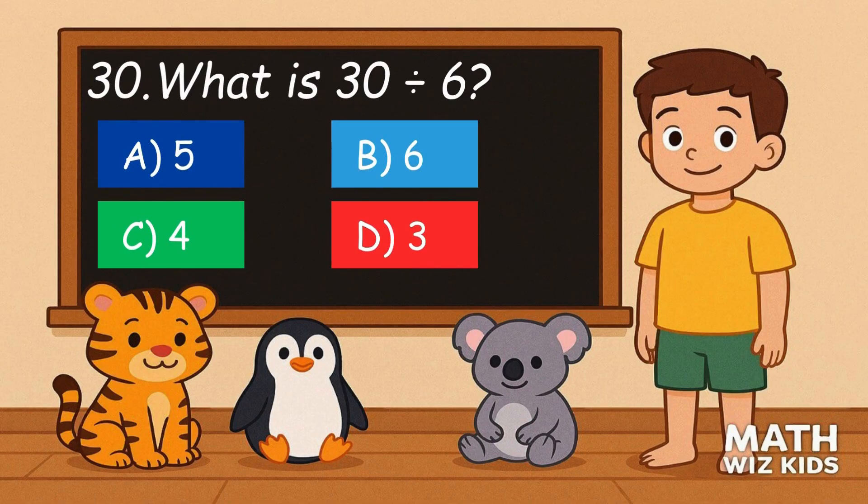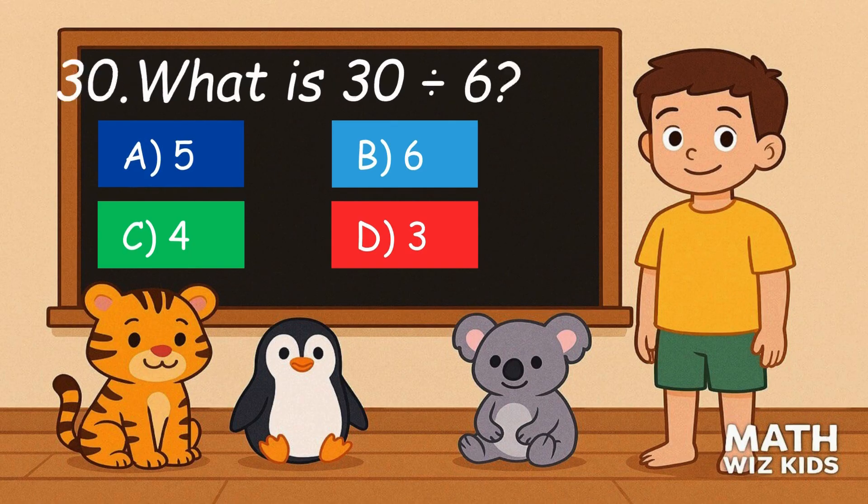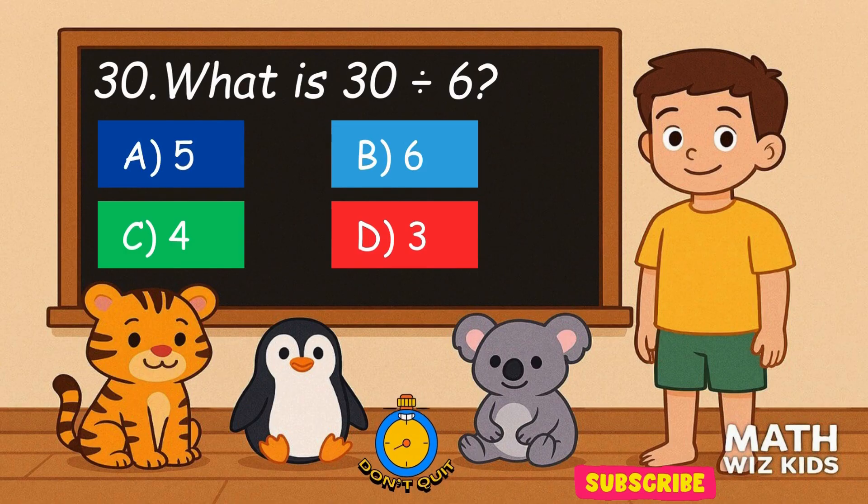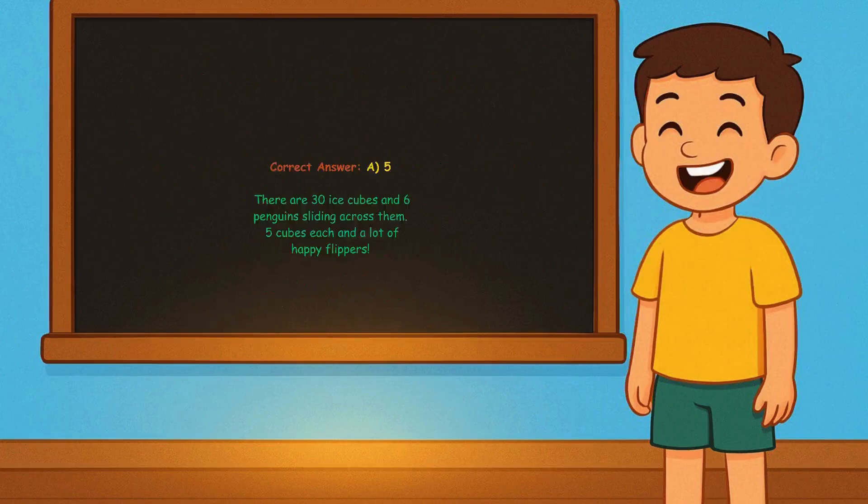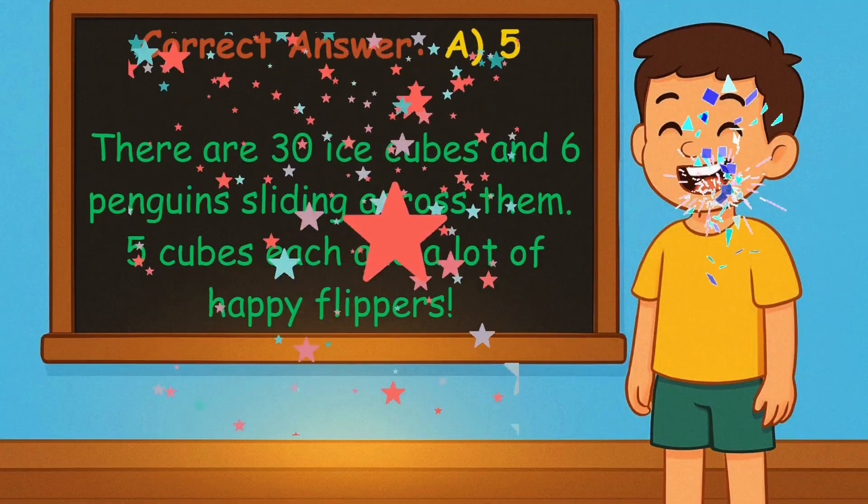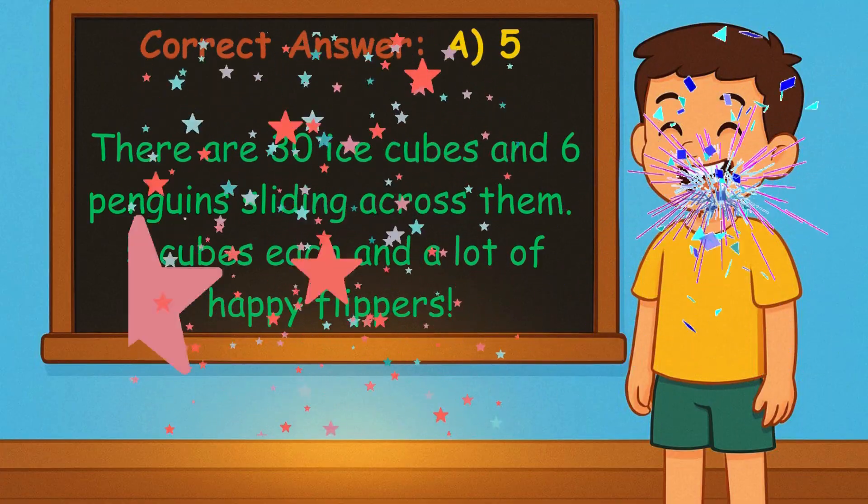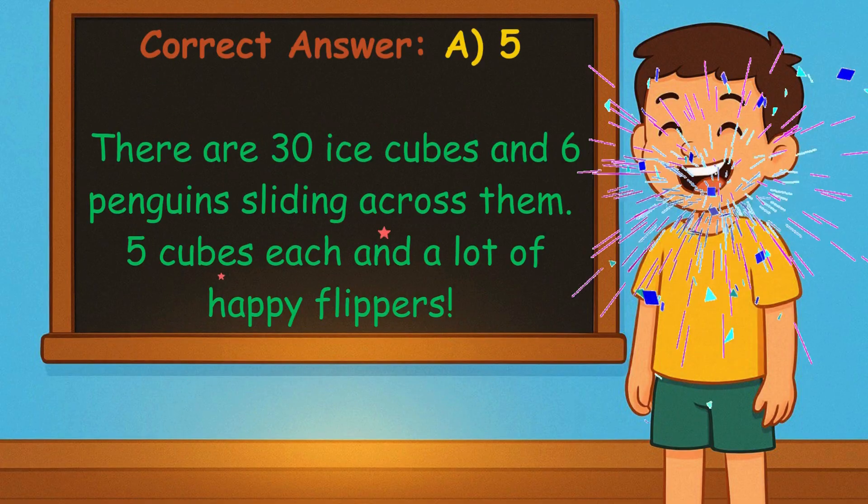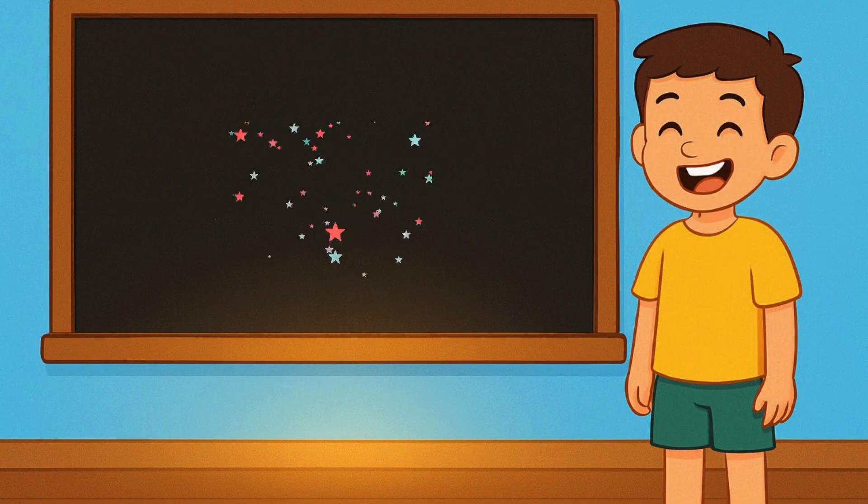30. What is 30 divided by 6? Is it A, 5, B, 6, C, 4, or D, 3? Correct answer is 5. There are 30 ice cubes and 6 penguins sliding across them. 5 cubes each and a lot of happy flippers. Yay!